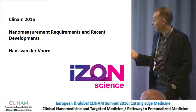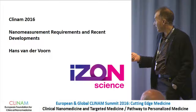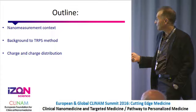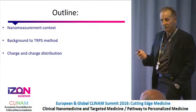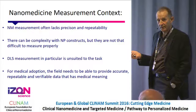I come from a company called Eyes on Science. Most of the time I live in Oxford, England. Some of you might have heard of us, but we make nanoparticle measuring equipment using nanopores to measure particles. I'm going to talk briefly about the nanomeasurement context for nanomedicine, a little bit about the background to what we call TRPS — tunable resistive pulse sensing — and then we'll focus on charge and charge distribution.